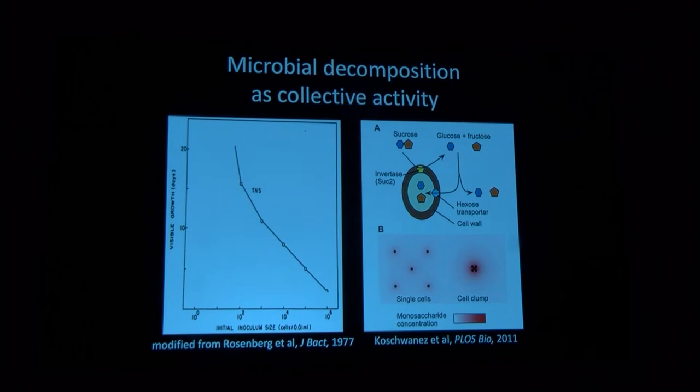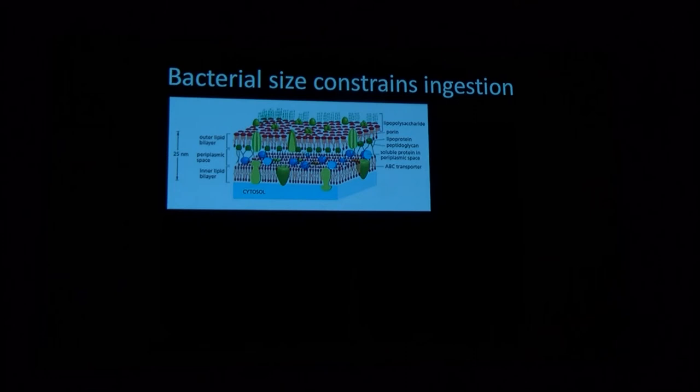So, if the physics of decomposition is basically kind of against microbes, where they're producing extracellular enzymes only to have them diffuse away, why are they doing it? Why not keep the enzymes on the inside? And of course, this is because of another physical constraint, which is the cell size.